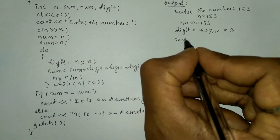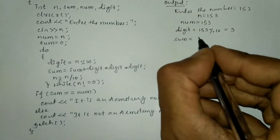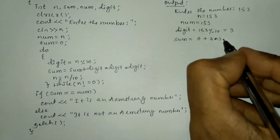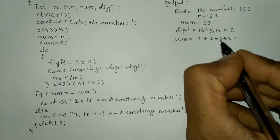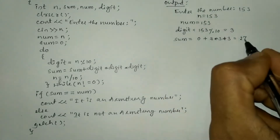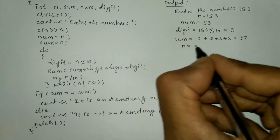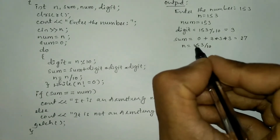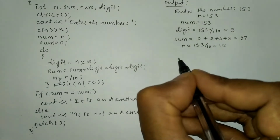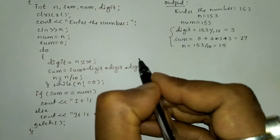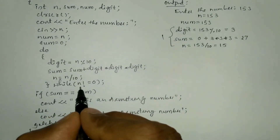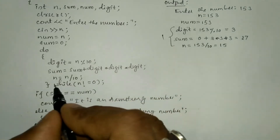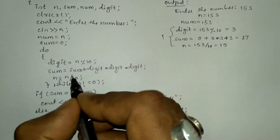Next, sum = 0 + 3*3*3. So 3×3=9, 9×3=27, plus 0 is 27. So 27 is stored in sum. Next, n = 153 / 10 (integer division) = 15, so first iteration is over. We check the while condition: n=15 is not equal to 0, condition is true, so control transfers to do again and executes the three statements.